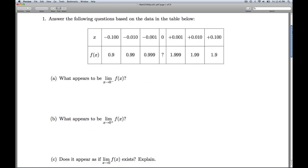In number 1, we're given a table of data, and what we have here is values of x and then the accompanying values of f(x). So when I plug x equals negative 0.1 into the function, I'm getting out 0.9, and so on.